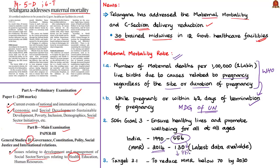You also need to know the Sustainable Development Goal of the United Nations for maternal mortality ratio, which is covered in SDG 3: Ensure healthy lives and promote well-being for all at all ages. Under this goal, Target 3.1 mentions that by 2030, the global maternal mortality ratio should be reduced to less than 70 per 1 lakh live births.